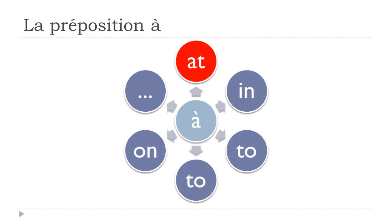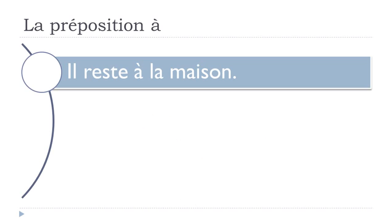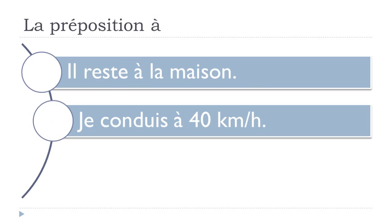So we'll start with 'at'. A few examples. The first one, if you want to translate it with 'at', would be 'Il reste à la maison.' Rester is 'to stay'. In that case, we would construct it with A. Il reste — he stays — à la maison — at home. Il reste à la maison.